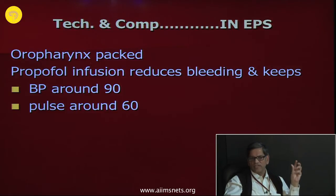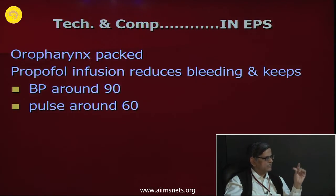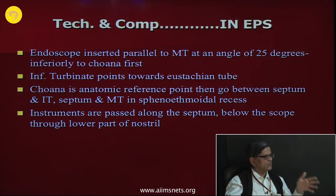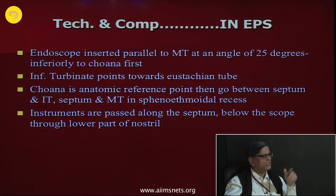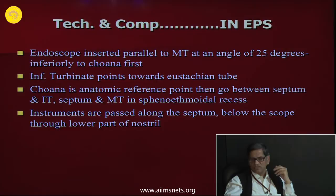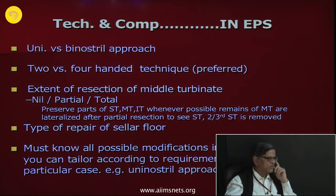Fresh patties are pushed back into the sphenoethmoidal recess and rostrum of the sphenoid sinus for 2–5 more minutes. Spending 10–15 minutes in this step makes the next stage very smooth. When packing, open the bayonet in the craniocaudal direction. Pack one nostril at a time; cut any synechiae by diathermy not scissors so it does not bleed. Oropharynx is packed; propofol anesthesia infusion reduces bleeding. Ideal blood pressure is around 90 with pulse around 60. The endoscope is inserted parallel to the middle turbinate at 25 degrees inferiorly toward the choana first along the floor, with choana as the anatomical reference point.